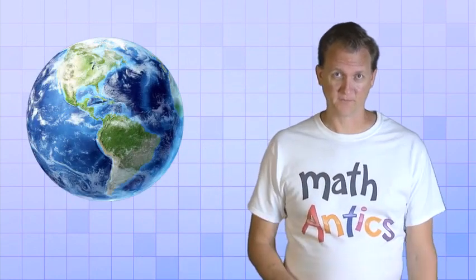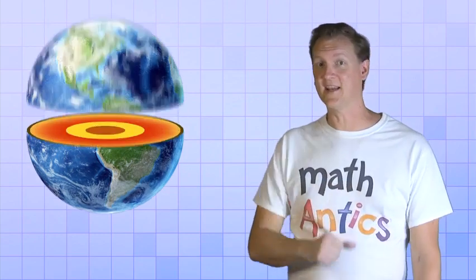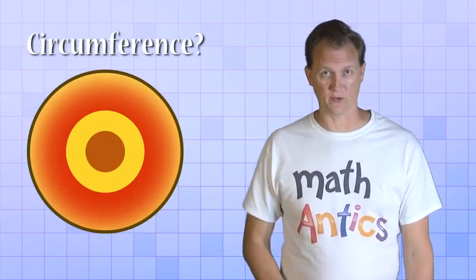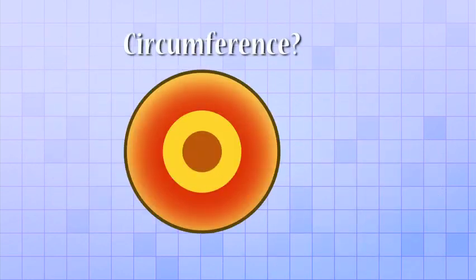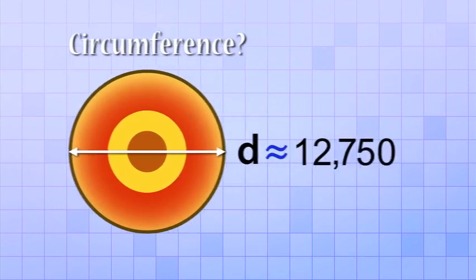Alright, let's try a couple real-world examples to make sure you've got it. Here's the real world, which as you probably know is a sphere. But if we take a slice of the world right at the equator, that slice is a circle. Let's find the circumference of that circle. To do that, we need to know the diameter of the Earth. That turns out to be about 12,750 kilometers.